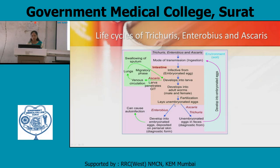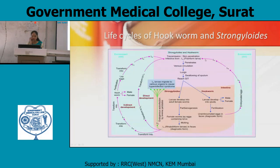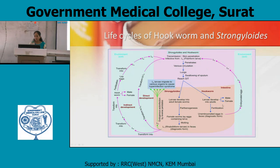In hookworm, male and female worms in the intestine: larva develops into adult, fertilization occurs, and unembryonated eggs in feces are the diagnostic form. Embryonated eggs develop into larval forms L1, L2, L3.